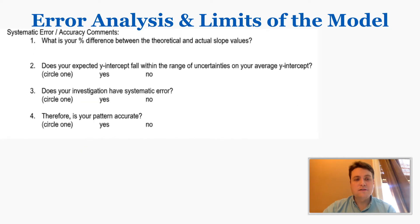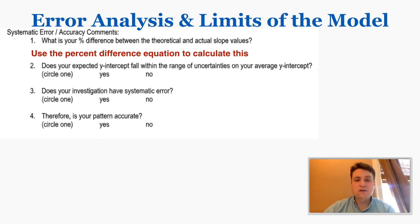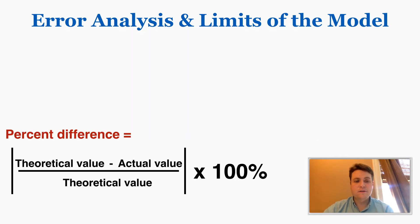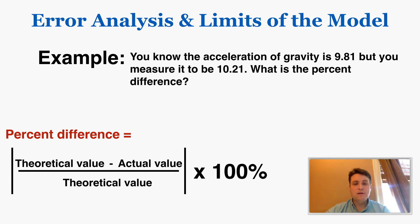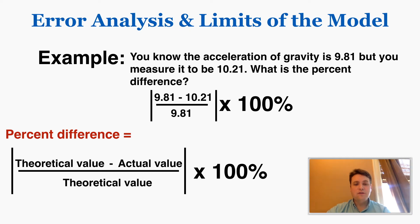For the systematic error section, the first question is: what is your percent difference between the theoretical and actual slope values? You use the percent difference equation: percent difference equals the absolute value of (theoretical value minus actual value) divided by the theoretical value, times 100%. For example, measuring the acceleration of gravity — we know it should be 9.81 but we measure 10.21. We subtract, divide by the theoretical value, take the absolute value, multiply by 100%, and get 4% as the percent difference.